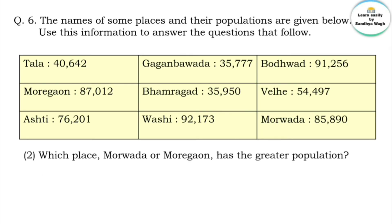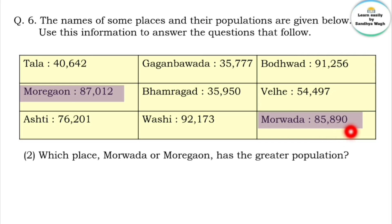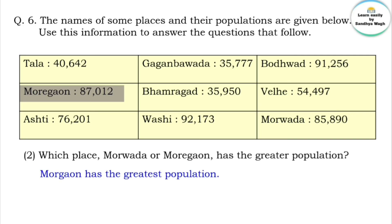The next question is: Which place — Morwada or Morgao — has the greater population? Morwada's population is 6,353 and Morgao's population is approximately 4,655. Comparing these, Morgao has the greater population.